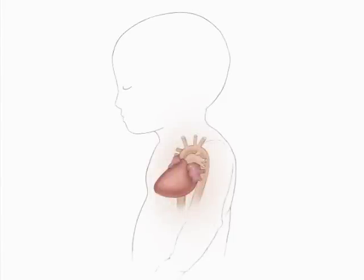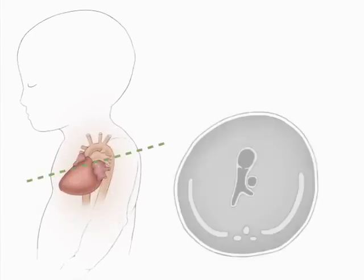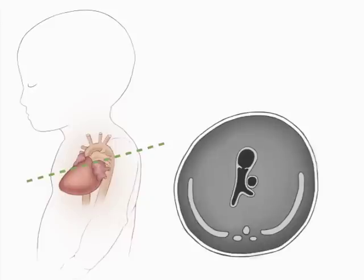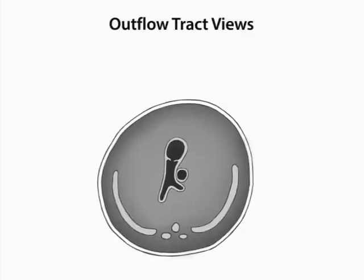This drawing shows a fetal chest and heart. The right ventricular outflow track view is an axial or transverse image through the fetal thorax above the diaphragm. It is used in concert with the left outflow track view to aid detection of anomalies not seen in the four-chamber view.